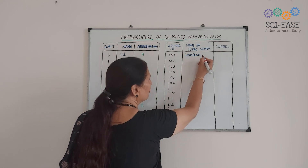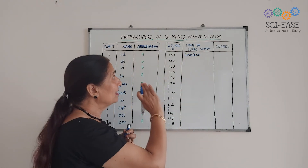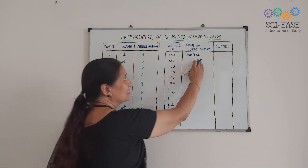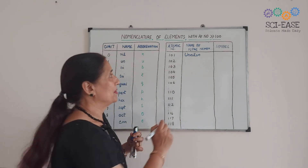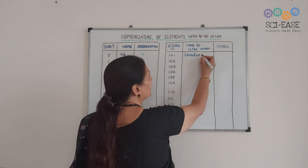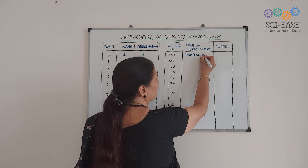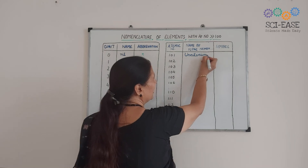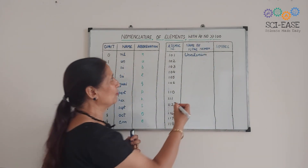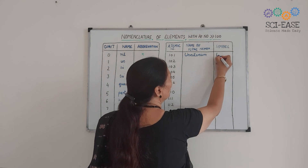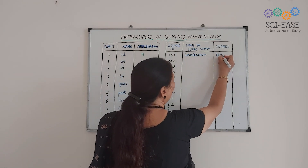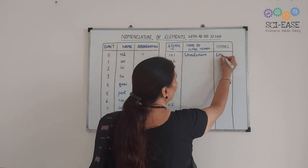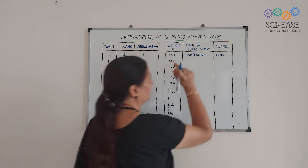One important rule: the last letters added are 'i', 'u', 'm' — that is, the suffix '-ium'. So for element 101, the name is 'Unnilunium'. Its symbol uses the first letter of each root: U for un, n for nil, u for un — giving the symbol 'Unu'.